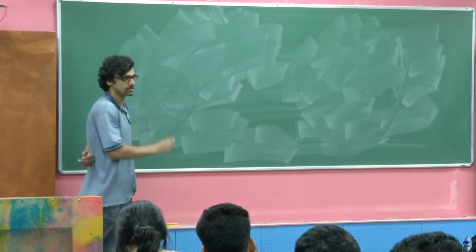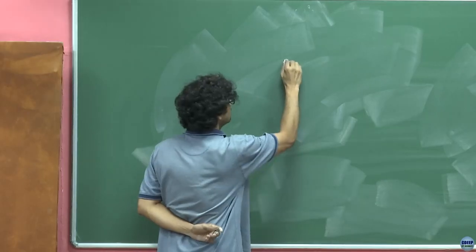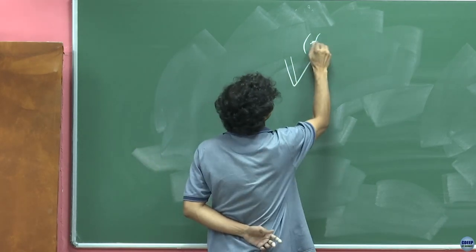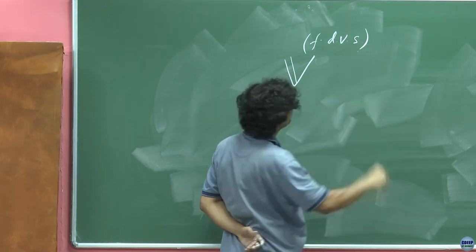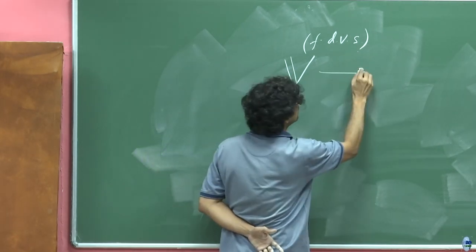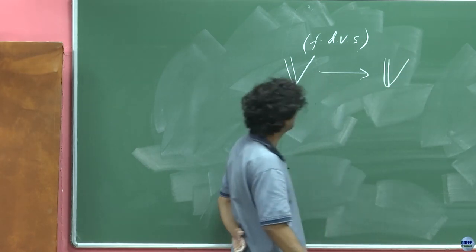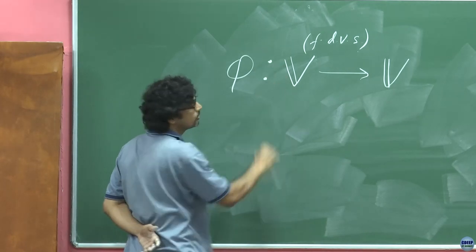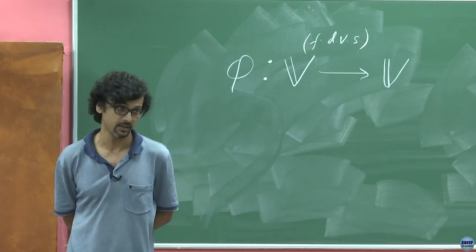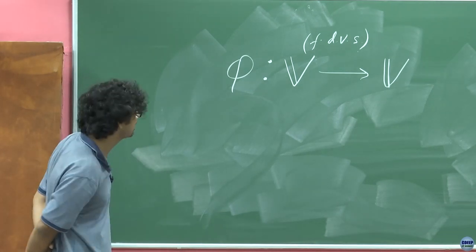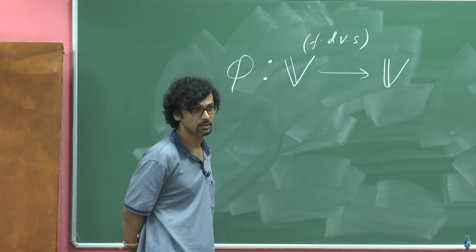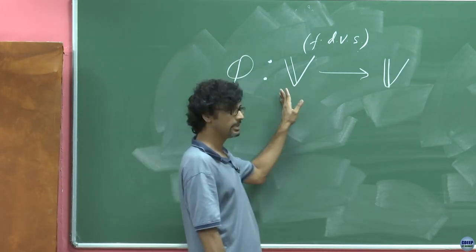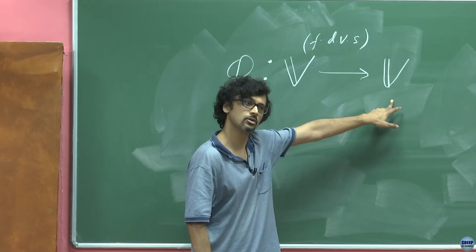What we are essentially asking for is: on a finite-dimensional abstract vector space — and finite-dimensional is very important — is this always possible? In infinite-dimensional vector spaces, there exist linear operators which may have no eigenvalues whatsoever. So whenever we talk about the existence of eigenvalues, we confine ourselves to finite-dimensional vector spaces.